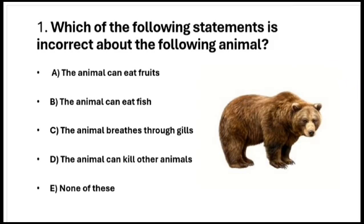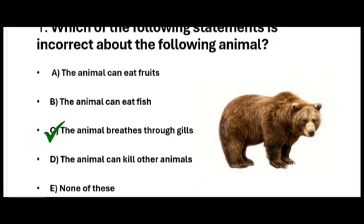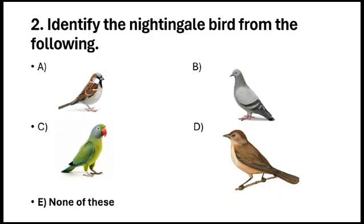The animal can eat fruits. Option B. The animal can eat fish. Option C. The animal breathes through gills. Option D. The animal can kill other animals. So the answer is option C. Question number 2.